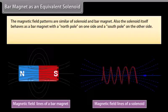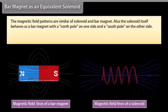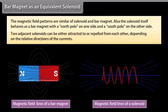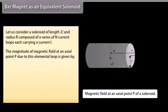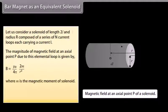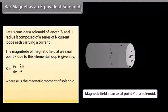The magnetic field patterns of a solenoid and bar magnet are similar. The solenoid itself behaves as a bar magnet with a north pole on one side and a south pole on the other. Two adjacent solenoids can either attract or repel each other depending on the relative directions of the currents. For a solenoid of length 2L and radius R with N current loops each carrying current I, the magnitude of the magnetic field at an axial point P is given by mu0 over 4pi multiplied by 2m over R³, where m is the magnetic moment of the solenoid. This is exactly the same as that of a bar magnet at a far off axial point.